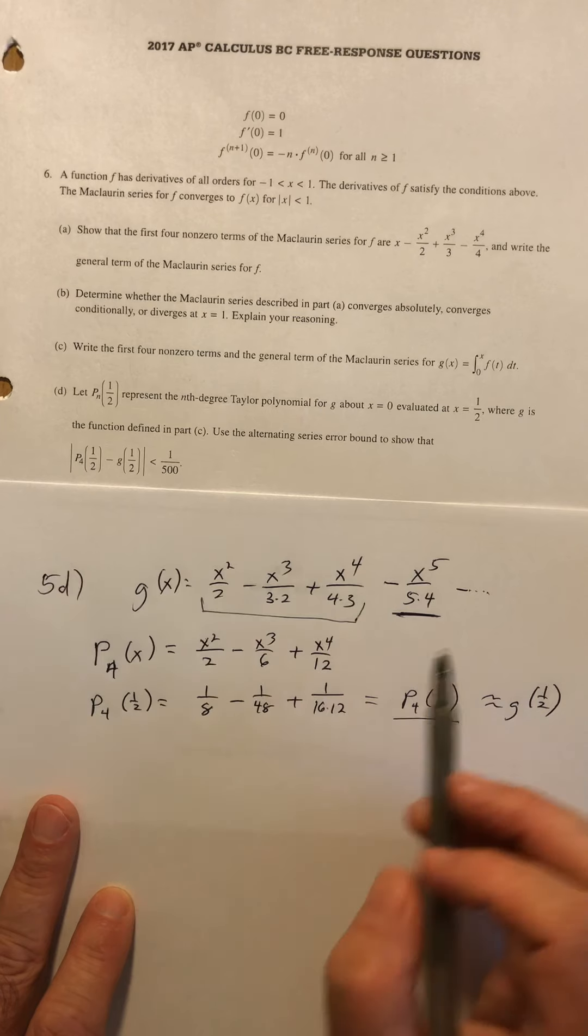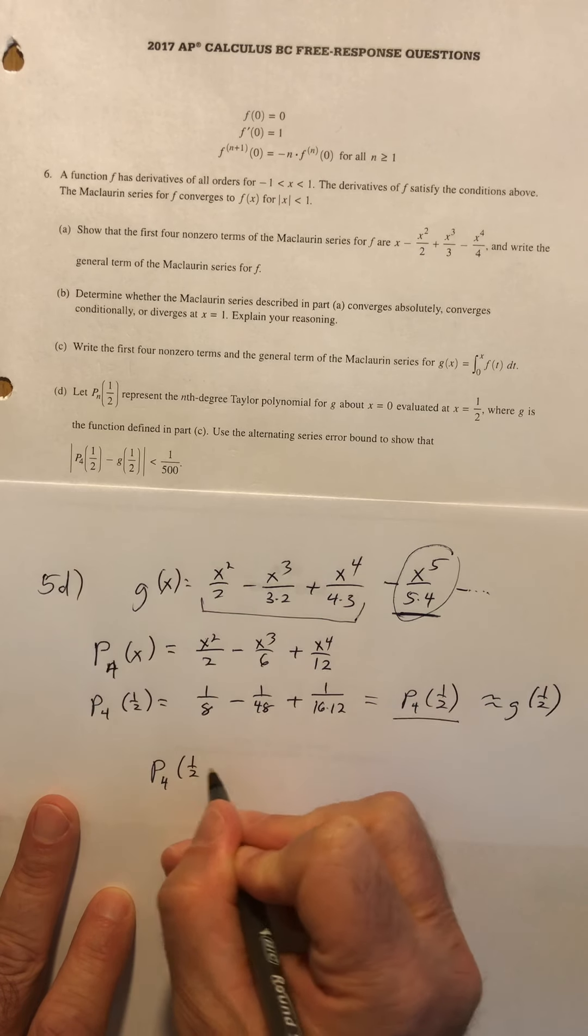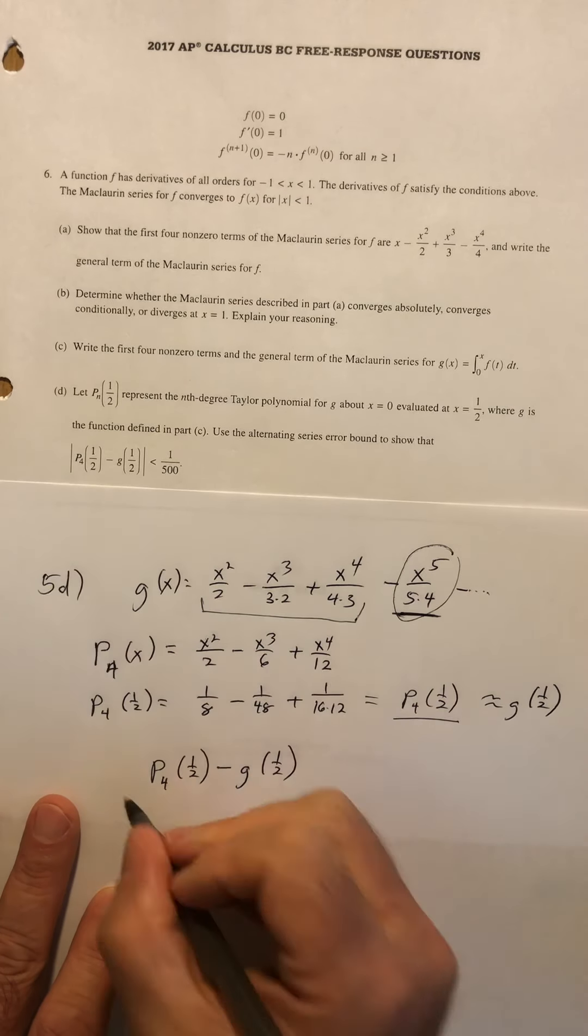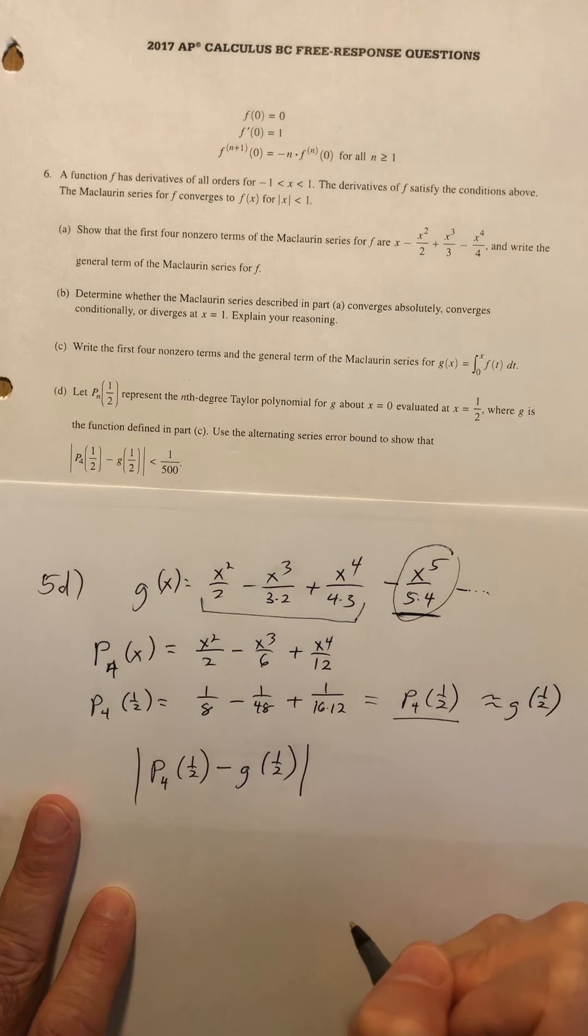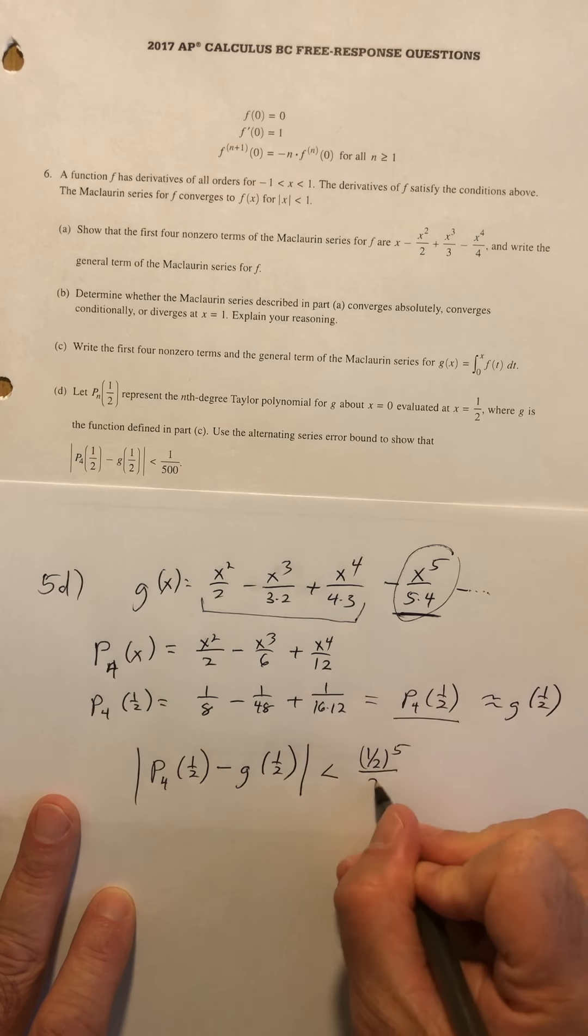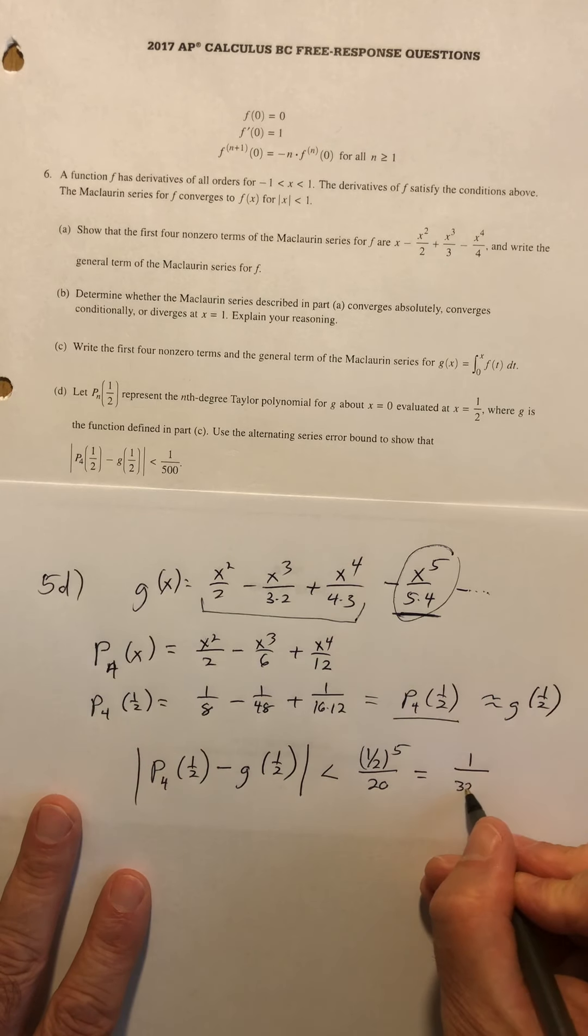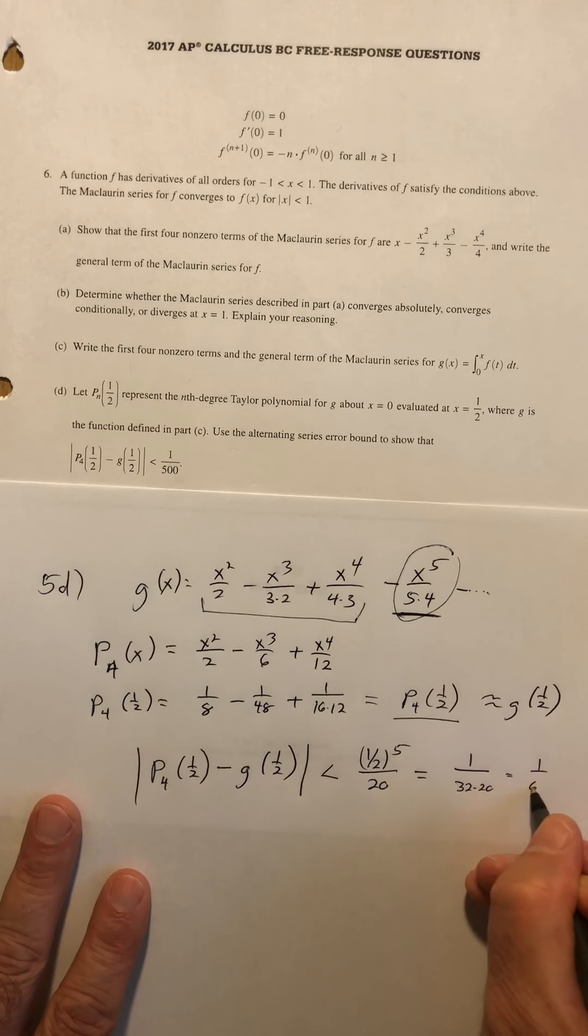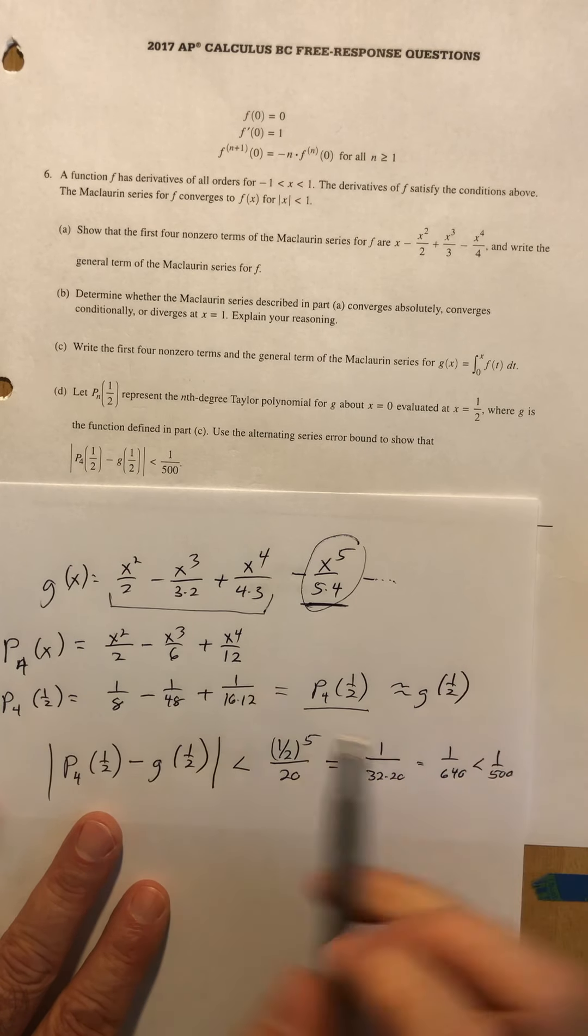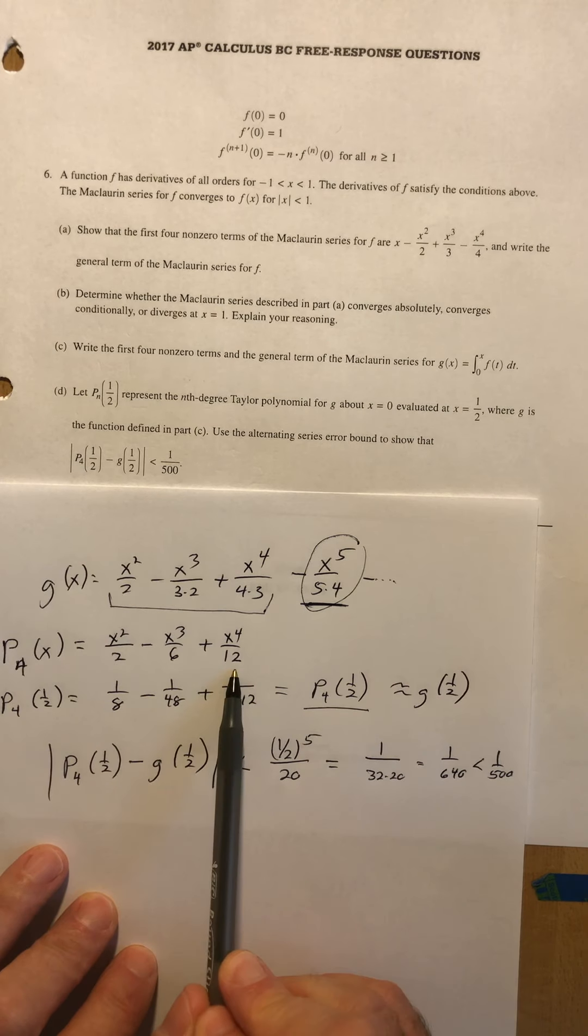Well, we know because it's an alternating series, they're going to be within the next term. So the way I write that is that my estimate, P4 of one half, minus my actual value, which I don't know, but I can represent with G of one half, have to have a difference whose absolute value is less than this term, which is one half to the fifth over 20. And that's equal to one over two to the fifth is two, four, eight, sixteen, thirty-two times 20. And that's one over six hundred and forty. And that is less than one five hundredth. So by looking at the next term in the alternating series, I can determine what the error is in my fourth degree estimate.